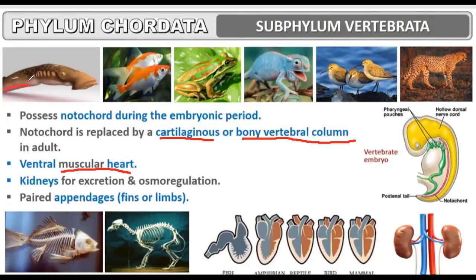The ventral side is the side facing the floor, and the upper side is the dorsal side. The side where the mouth is present is the anterior side, and the side opposite to the mouth — where the anus is — is the posterior side. For a tiger, the side facing the floor is ventral, the opposite is dorsal, the mouth end is anterior, and the tail end is posterior.